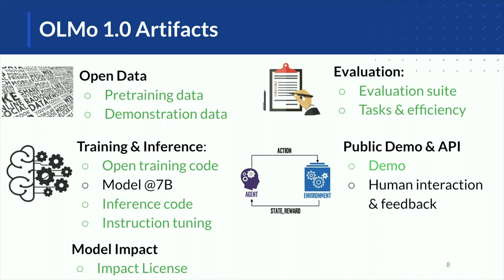Here are the artifacts that we have released or are about to release this year or early next year. We have open data, including pre-training and demonstration data, all our training and inference code, and models at 1 billion and 7 billion scale. We also have an evaluation suite to evaluate task performance and efficiency, an internal demo we are hoping to make public early next year, and we are working on improving these models through human feedback. We will release all of these through our impact license, which is a license to release this data responsibly.